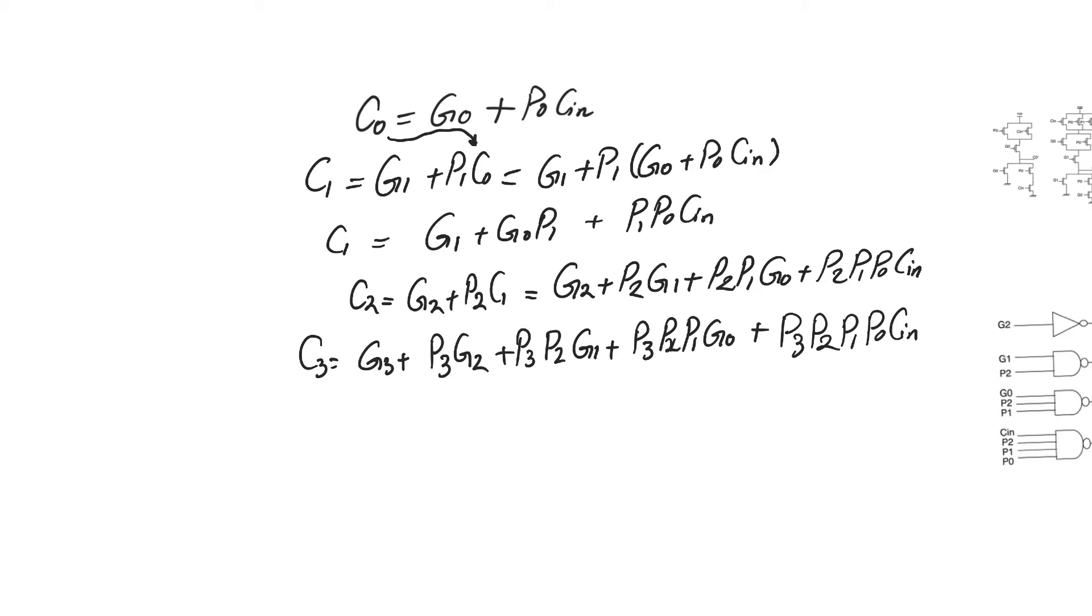Any carry position, the expression for that carry out, could be calculated using inputs that are all available at time equal to zero. This could indicate that we finally have an adder whose delay does not depend on the number of input bits n. This is because any bit position will start to calculate at time equal to zero. So we finally have an adder whose delay is actually independent of n.